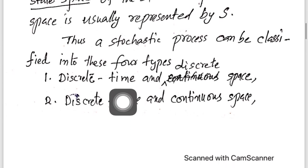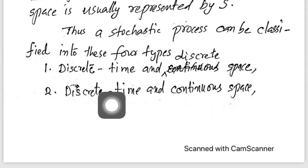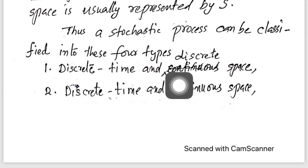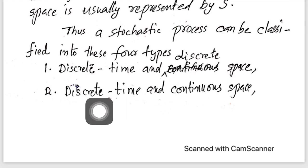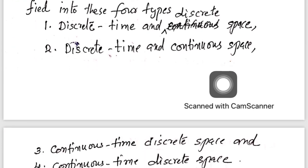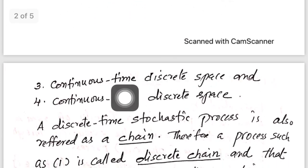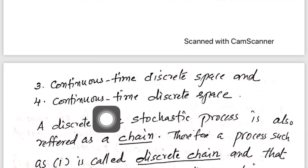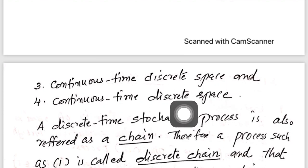After that, we classified a stochastic process in terms of the index set and state space as: discrete time discrete space, discrete time continuous space, continuous time discrete space, and continuous time continuous space stochastic processes.